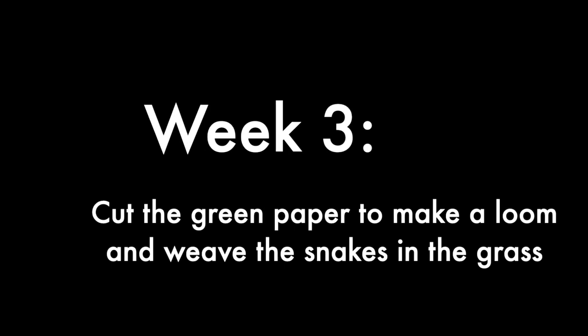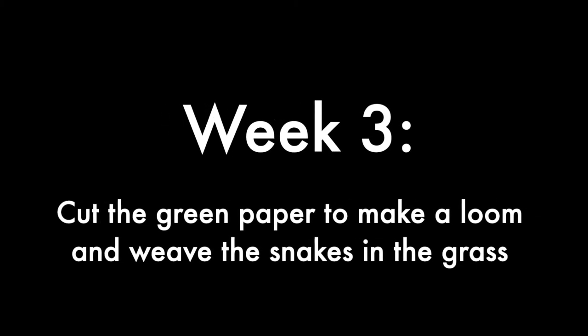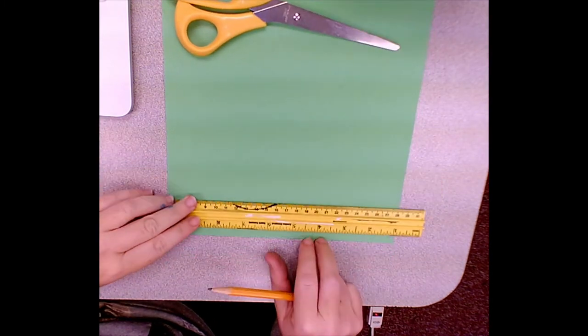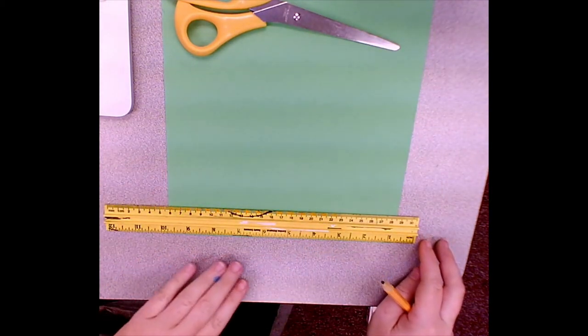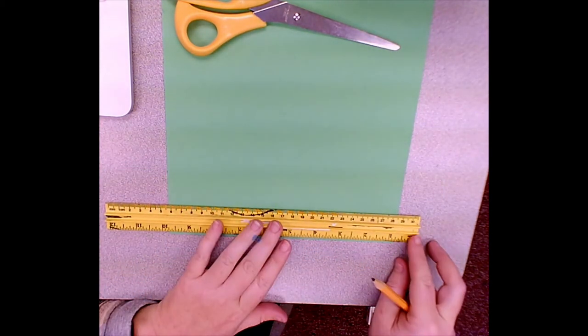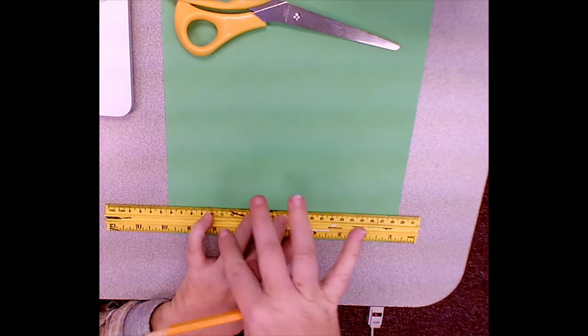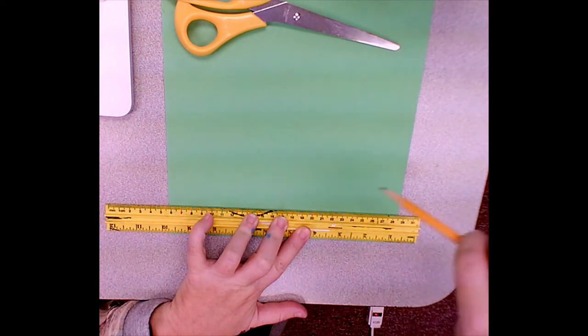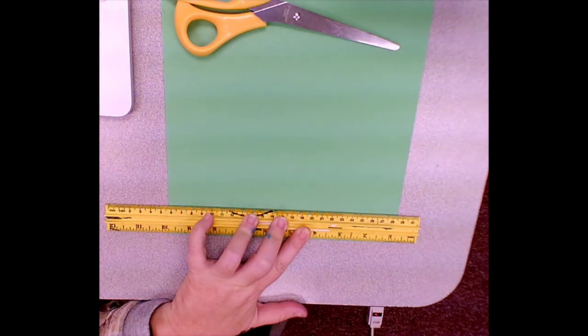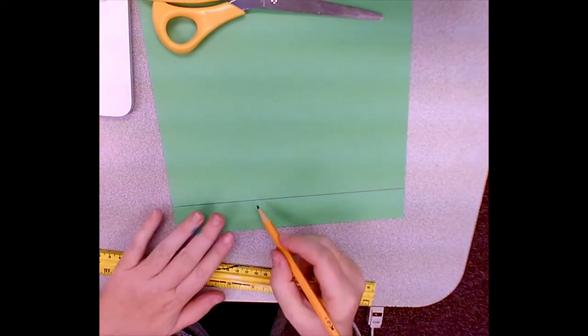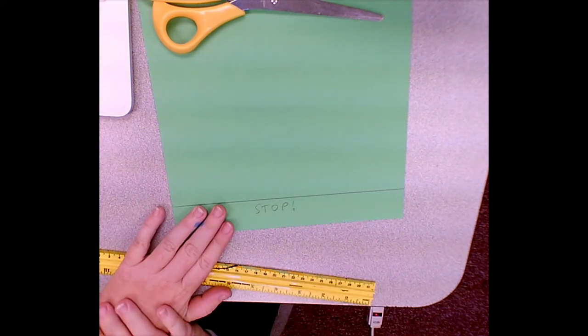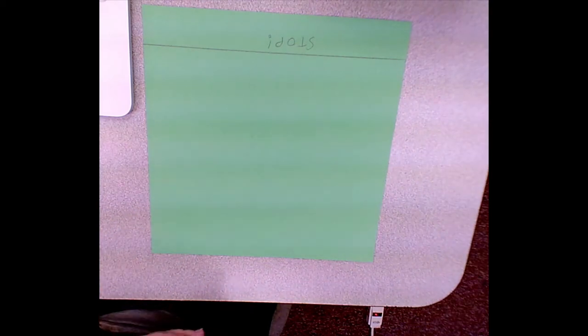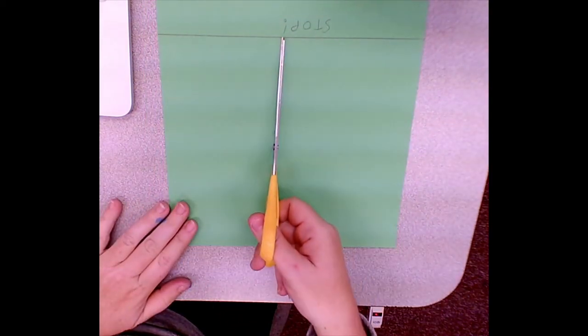Week three: cut the green paper to make a loom and weave the snakes in the grass. It's time to get a little bit technical. I'm gonna use a ruler to make sure that my line is straight, and I would suggest you give it a try. Now this line is going to be about an inch from the bottom of my page, and I'm going to draw the line to remind myself to stop at that line when I am cutting my strips. Now I'm going to turn my page over and I'm going to figure out where the center is.